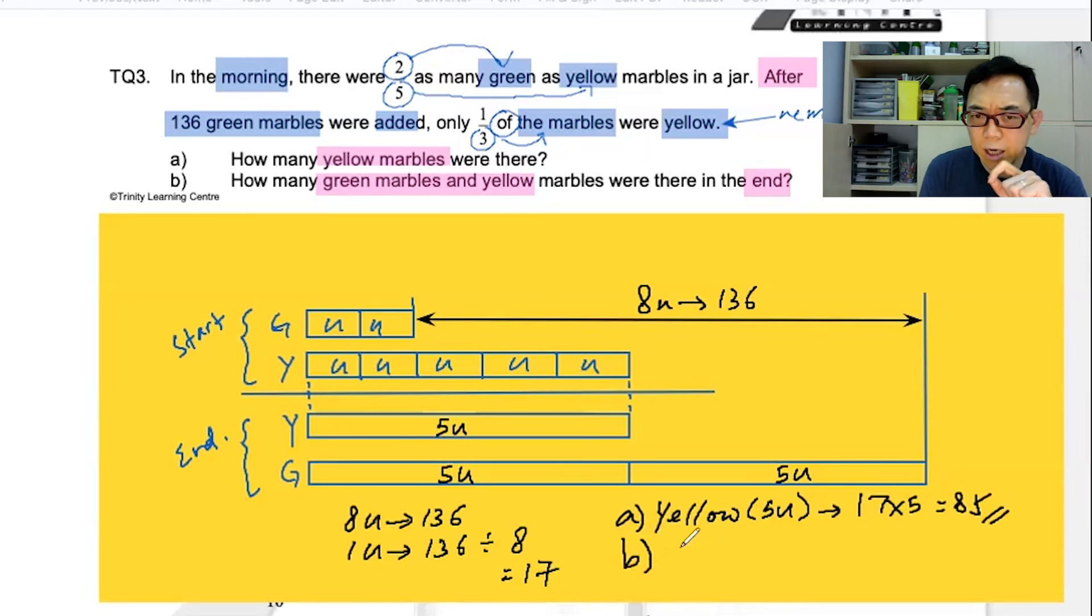For part B, they are asking you how many green and yellow in the end. This is what they are asking you to find. Because this is 85, 85 and 85. 85 times three, answer 255.